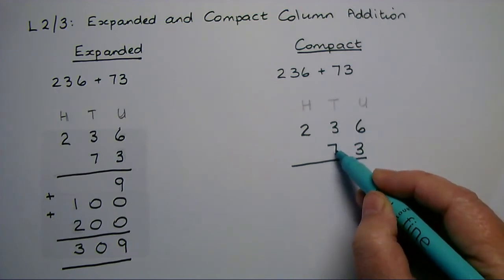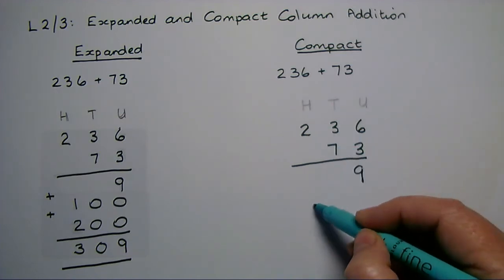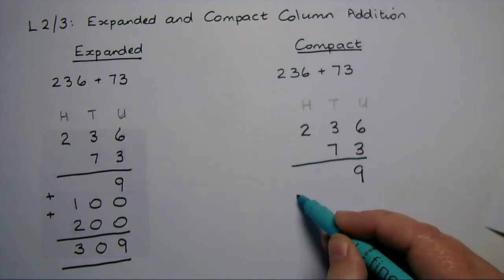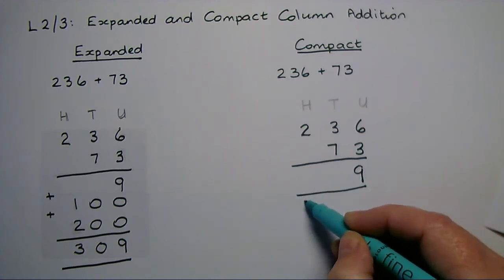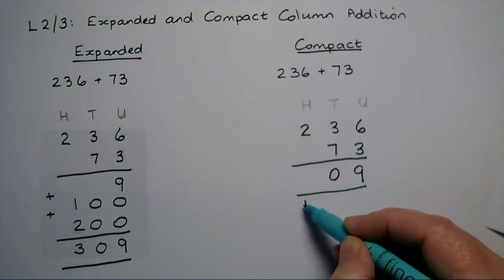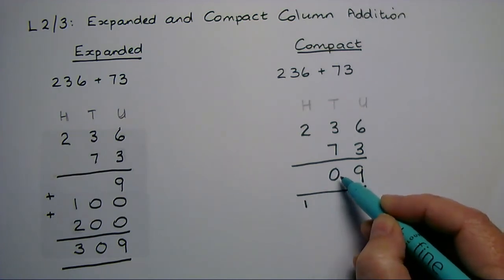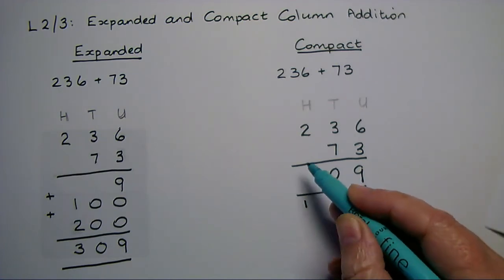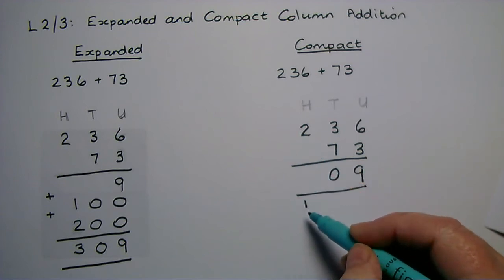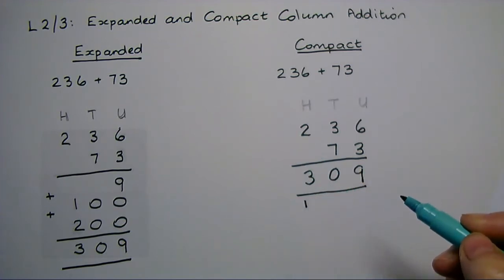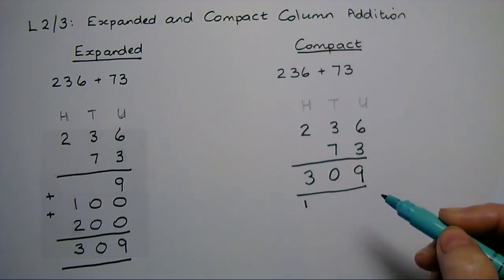10 tens is 100. Instead of writing that on a separate line, I'm going to put the 1 underneath as a carry in the hundreds column. No tens, but 100. Now I'm going to add the hundreds and I will get the same total: 309.